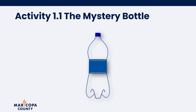In Activity 1.1, students will learn that air is all around them through the mystery bottle activity. The Maricopa County Air Quality Department provides one mystery bottle, or empty half liter water bottle, in each resource kit. Begin the lesson with the water bottle hidden in the tote bag. Students will try to guess what's in the mystery bottle. Use the teacher script in blue font to help guide the discussion. After students have guessed the contents of the bottle, remove the bottle from the tote bag — don't be surprised if some students think the bottle is empty.